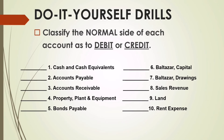Number two: accounts payable. Accounts payable is an account that falls under liability, so the normal side of liability is credit — the answer for number two is credit. Number three: accounts receivable is classified as an asset, and the normal side of asset is debit — the answer for number three is debit. Number four: property, plant and equipment falls under assets, so the normal side of PPE is debit.